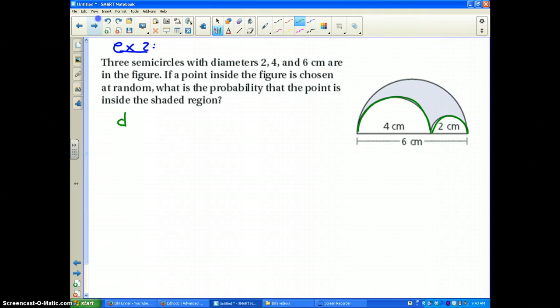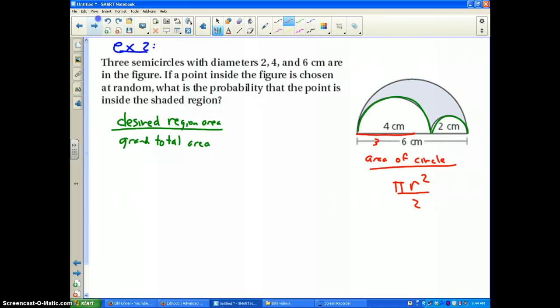Well, you can see my three semicircles. Our formula, we want the desired region's area divided by the grand total area. That's the easiest to figure out, the grand total area. So let's do that first. The grand total area, it's a semicircle. The area of a circle is pi times radius squared, but since it's half a circle, I've got to divide that by two. My radius is half of that, so my radius is three. So I plug three in for r, and I find out I get pi times 3 squared divided by 2, which equals 4.5 pi.